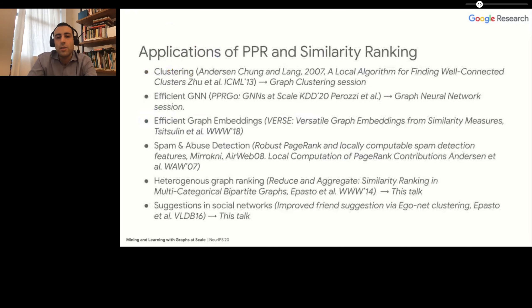There are also many other applications that we will not cover today, for instance graph embeddings. PPR can be used efficiently to embed a graph. It can also be used to find spam or abuse in a network. Other two applications that we will see now are ranking in heterogeneous graphs and social network recommendations or link predictions in social networks.